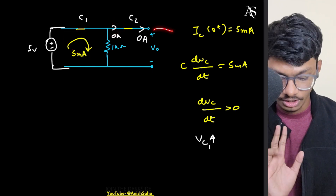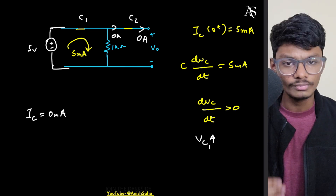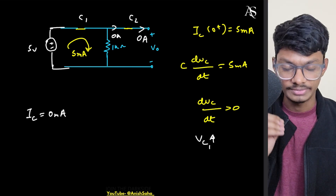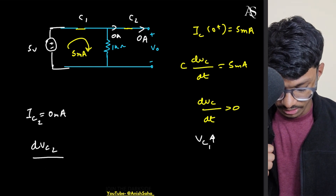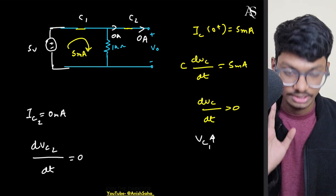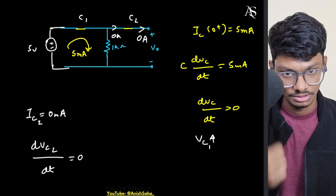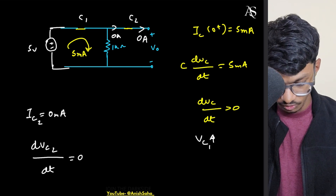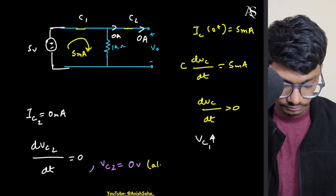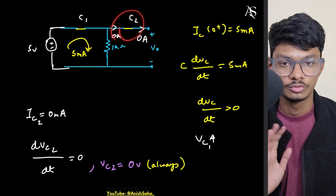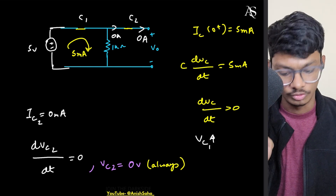So the current for capacitor C2 is zero milliamps. If it's zero, there's no rate of change of voltage — dVc2/dt equals zero. That means whatever voltage was there previously remains. Since it was initially uncharged, Vc2 will remain zero forever. Basically, capacitor C2 has no use in this circuit — they've added it just for the sake of it. Even if there were a resistor in that branch, it would also be useless since the current through it is always zero.